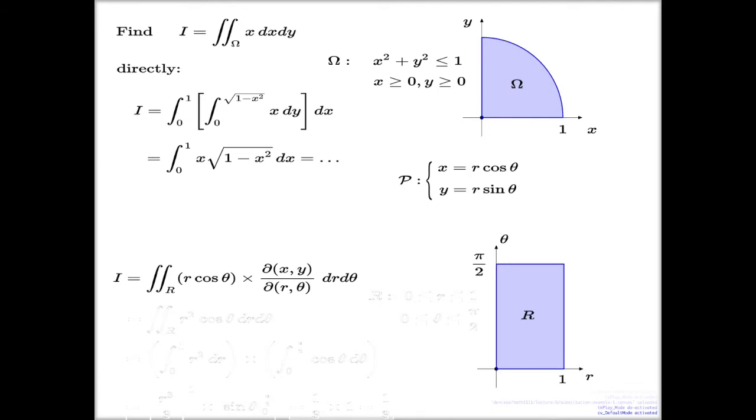The Jacobian for polar we computed a few times already, and it's something I suggest you remember because it's very easy to remember. Jacobian for polar is just simply r value, which means your polar substitution is invertible everywhere except the origin where r is zero.